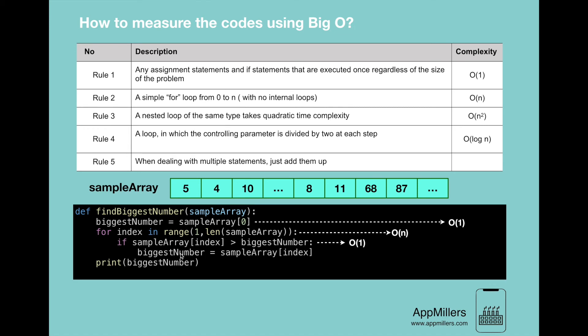Then again, we have an assignment here. This will also take O(1) according to our first rule. Then finally, we have a print statement here which takes constant time complexity as well.